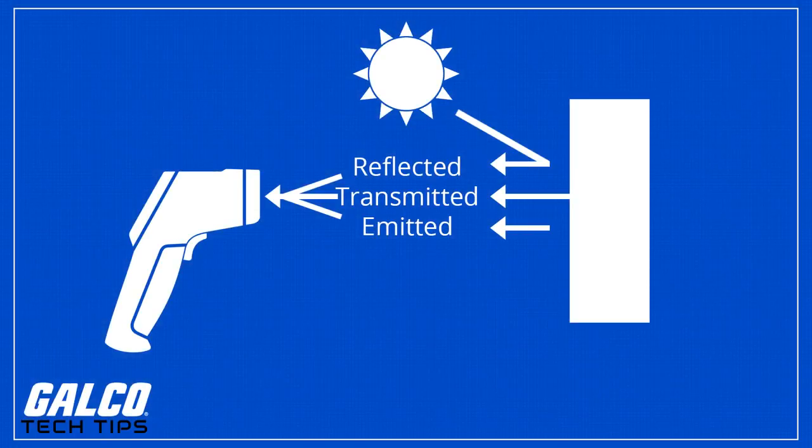The IR thermometer works by focusing the light that is coming from that object in the form of infrared rays and tunneling that light into a detector known as a thermopile.